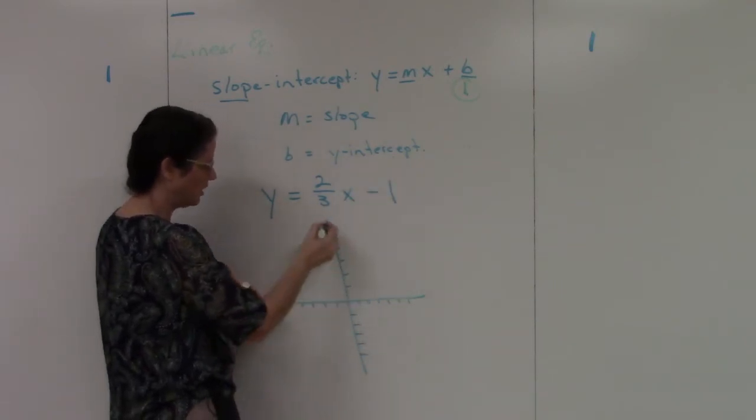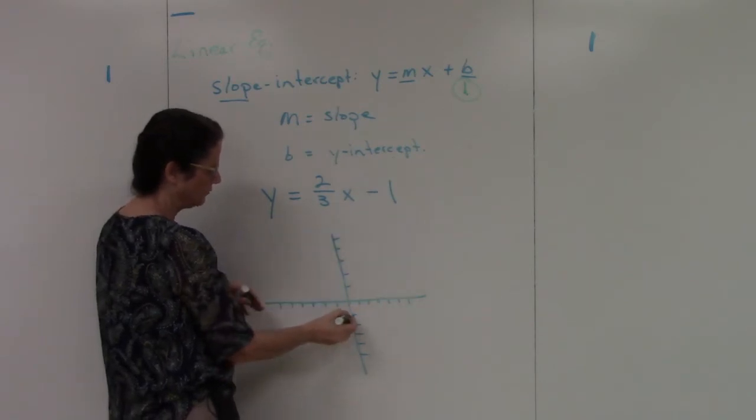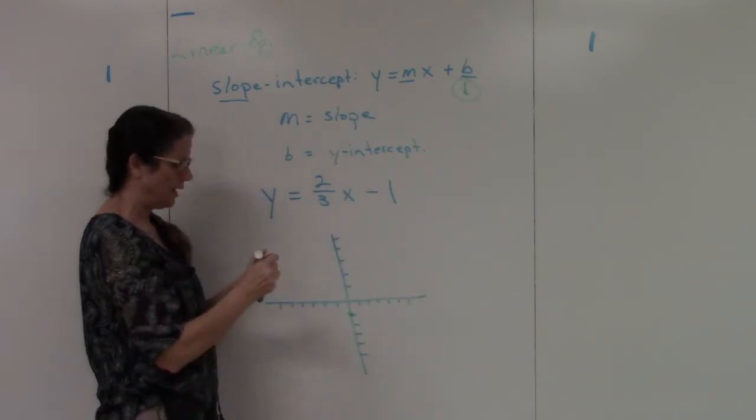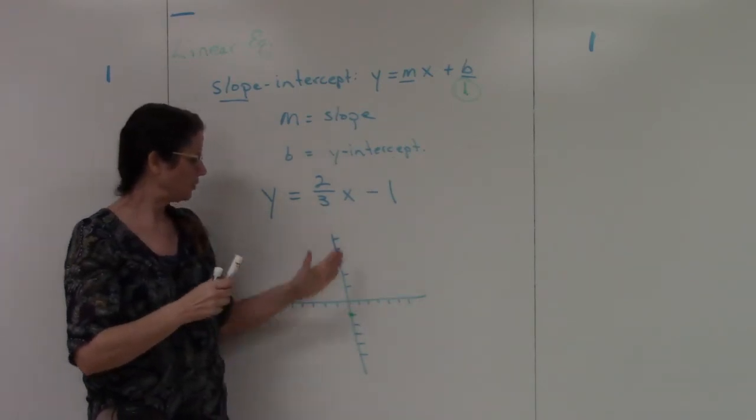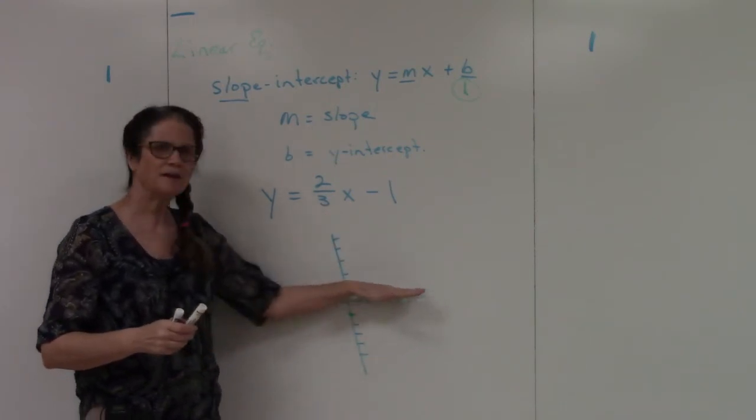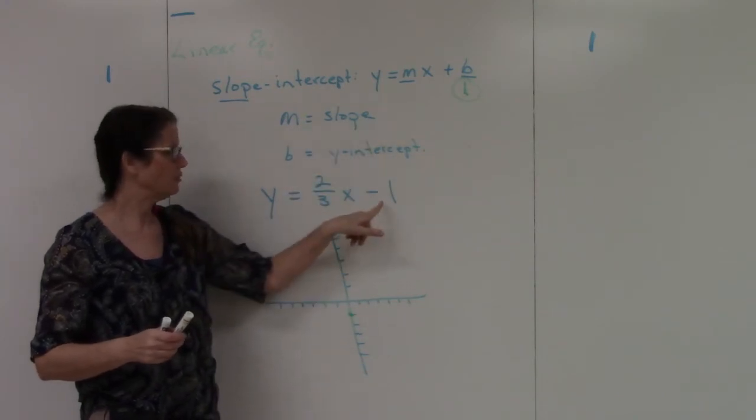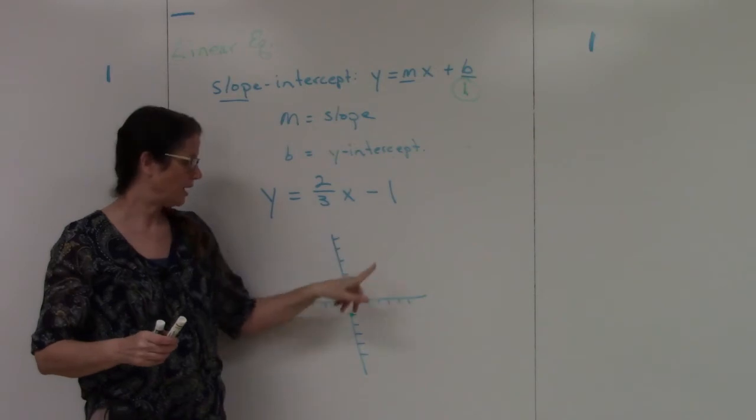So I'm going to put a point on the y-axis. So remember, y is your vertical line at negative 1. So when you're setting up your Cartesian coordinate system, this is my y-axis. This is my x-axis. And it'll be that way every time. So with y-intercept form, I start at my negative 1. I put a point.